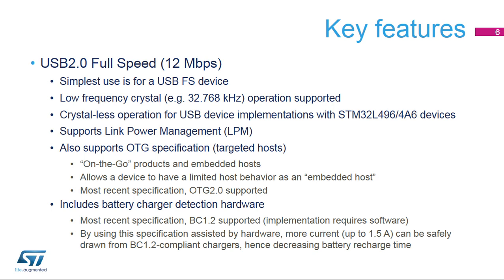Built-in support for link power management adds enhanced power modes on top of the USB 2.0 specification. The on-the-go or OTG function enables the implementation of an OTG product or an embedded host, both of which have the capacity to behave as a targeted host. The battery charger detection feature allows for increased current up to 1.5 amps to be drawn from BC 1.2 compliant chargers.